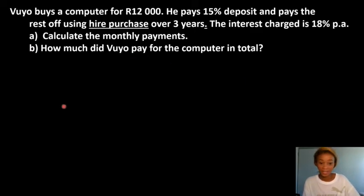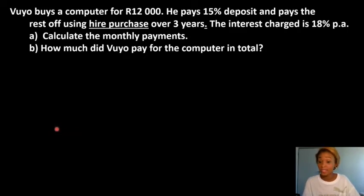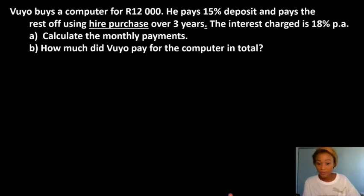Okay, so let's look at this question. It says Vujo buys a computer for 12,000 rands. He pays a 15% deposit and pays the rest off using hire purchase over three years. The interest charged is 18% per annum. Calculate the monthly repayments.